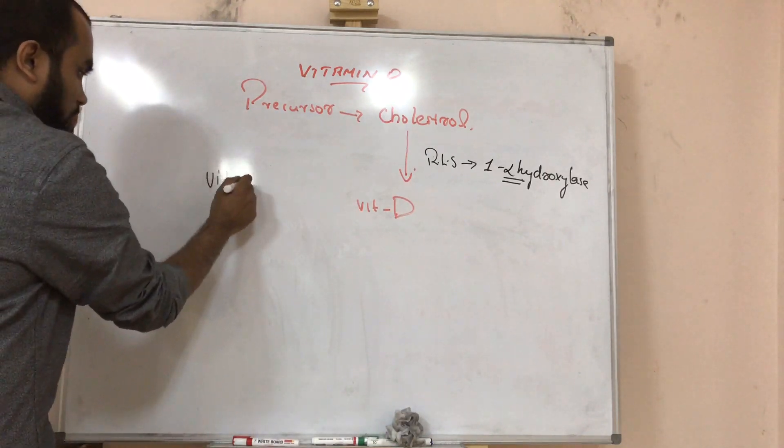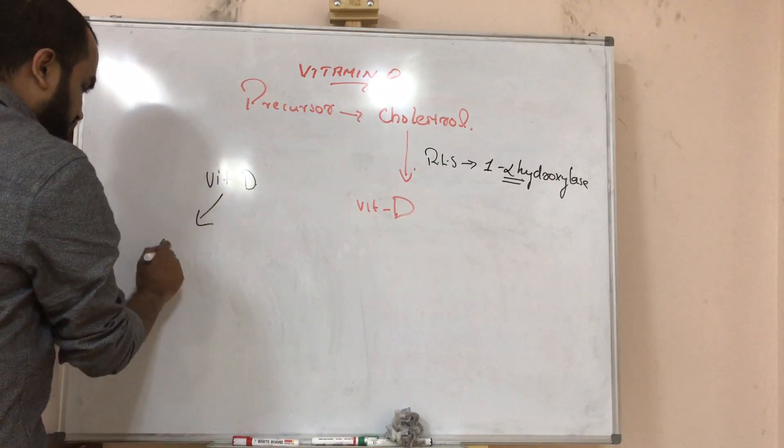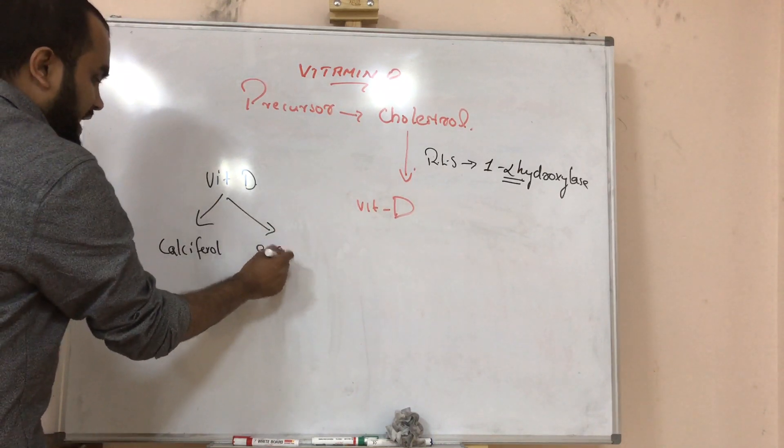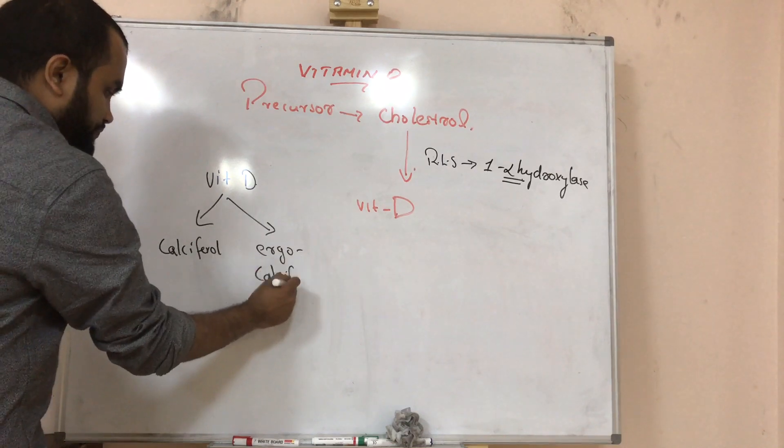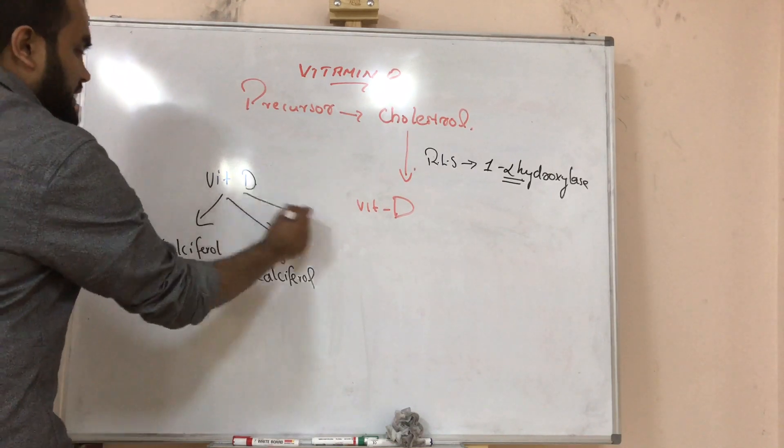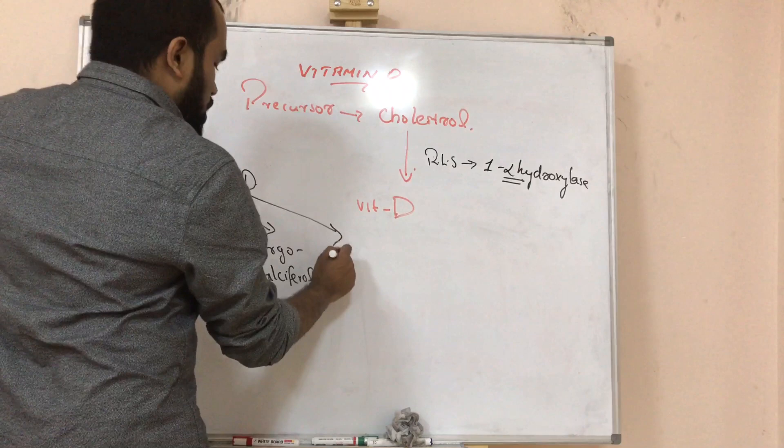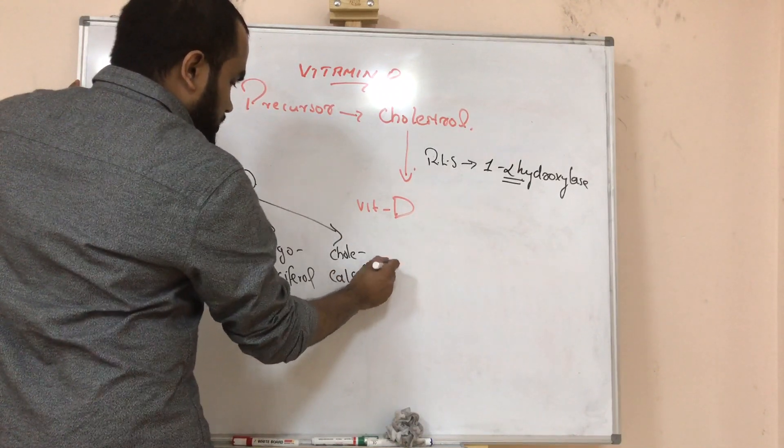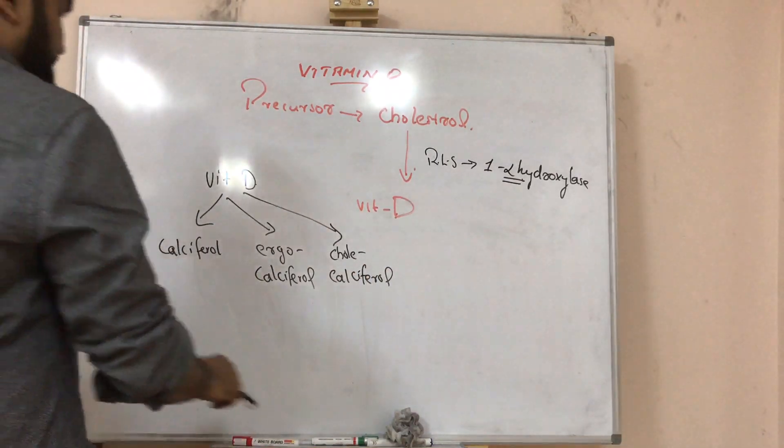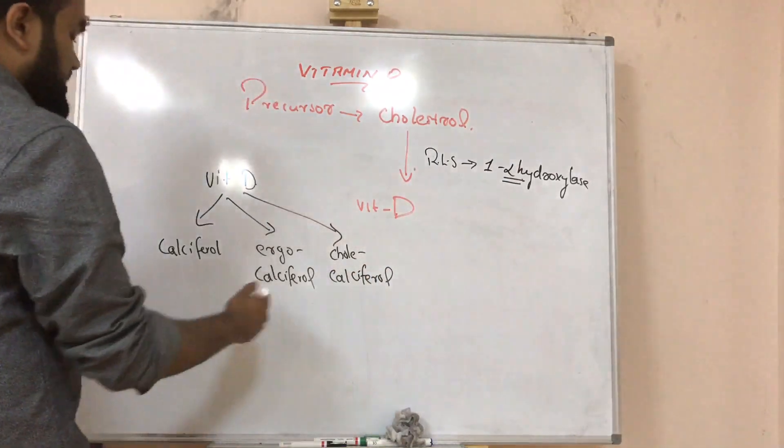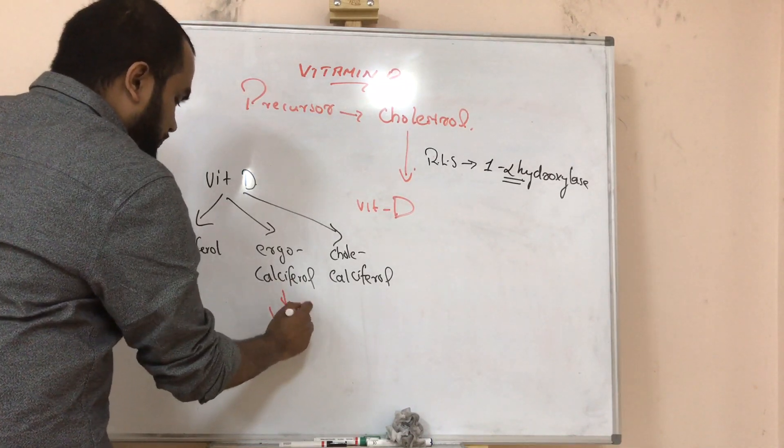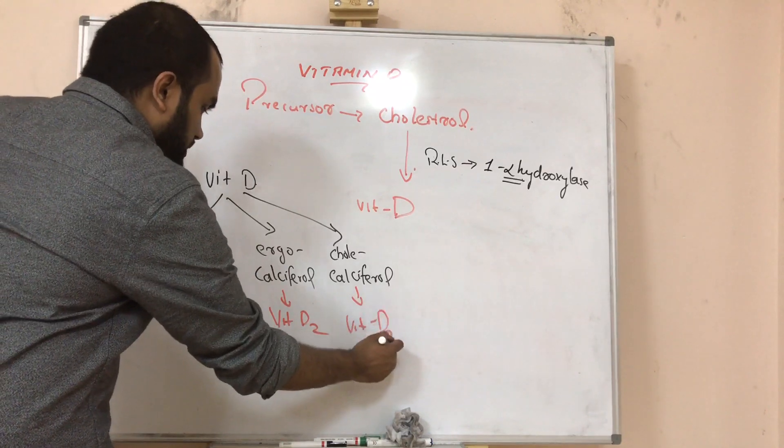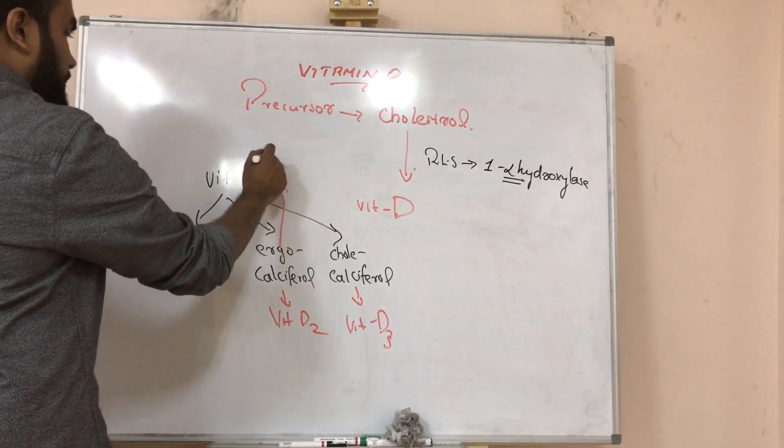I told you vitamin D is also having different forms. One is calciferol, second is ergo calciferol, third one is cold calciferol. This ergo calciferol is called vitamin D2 and this is vitamin D3. Ergo calciferol is obtained from plants and this comes from animals, vitamin D3 or cold calciferol.